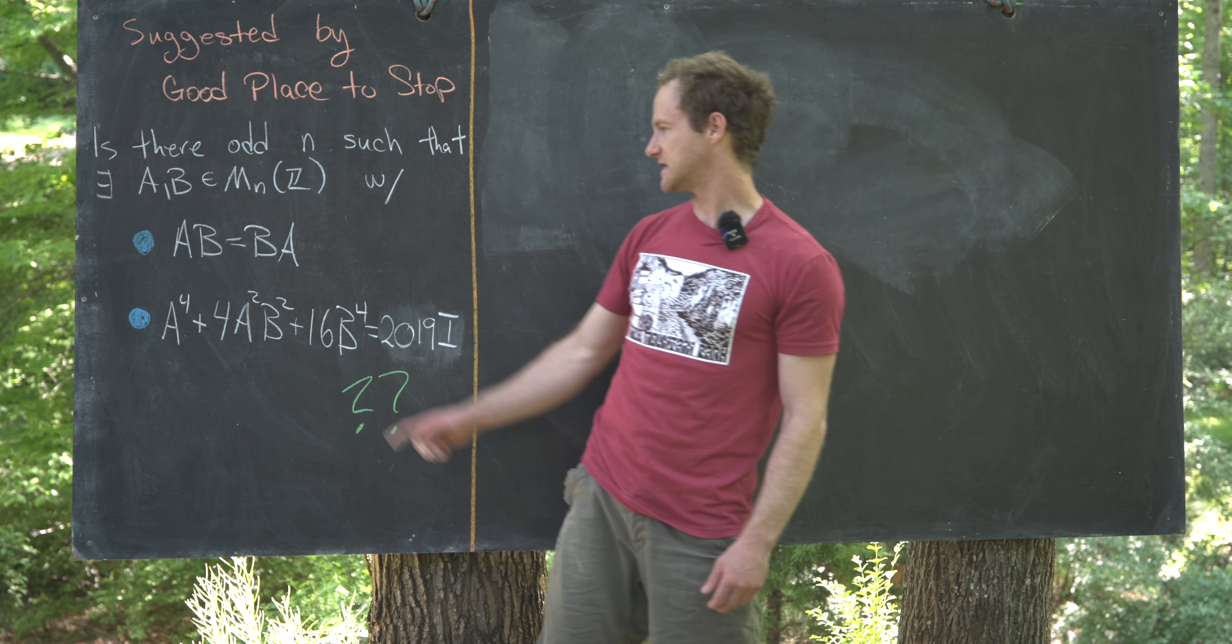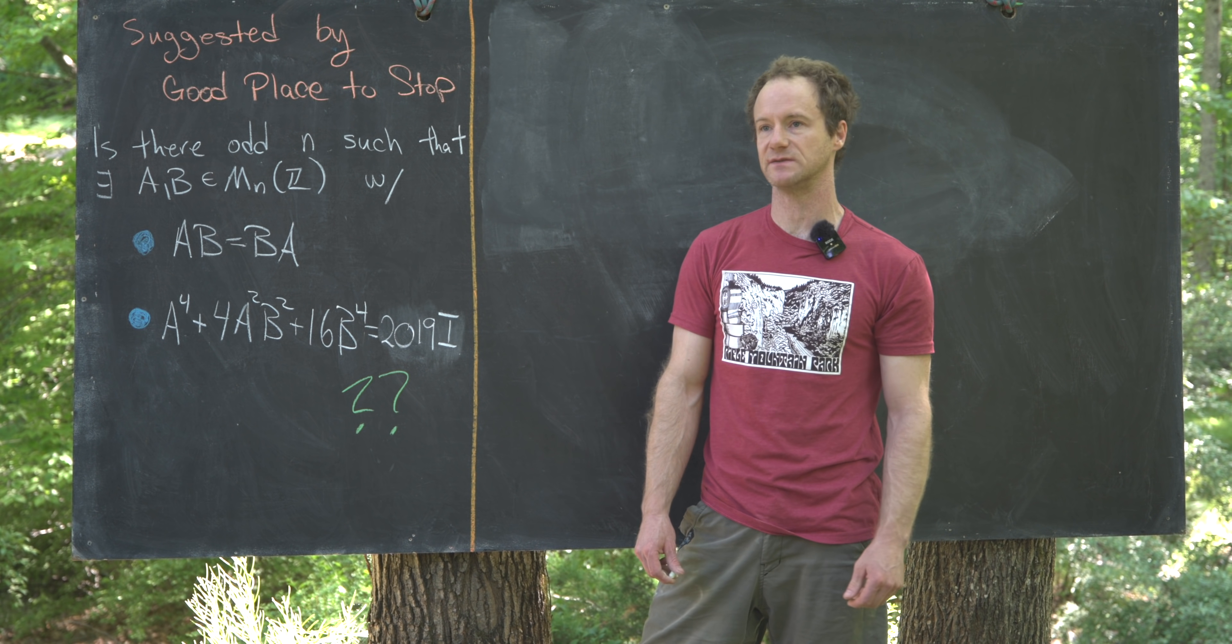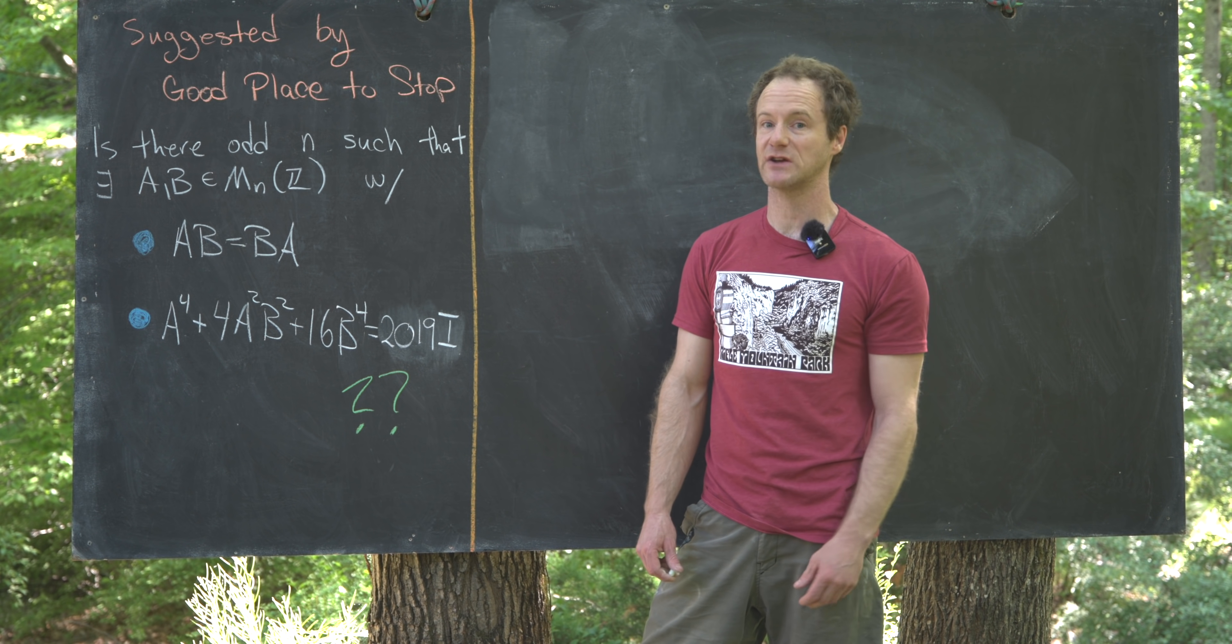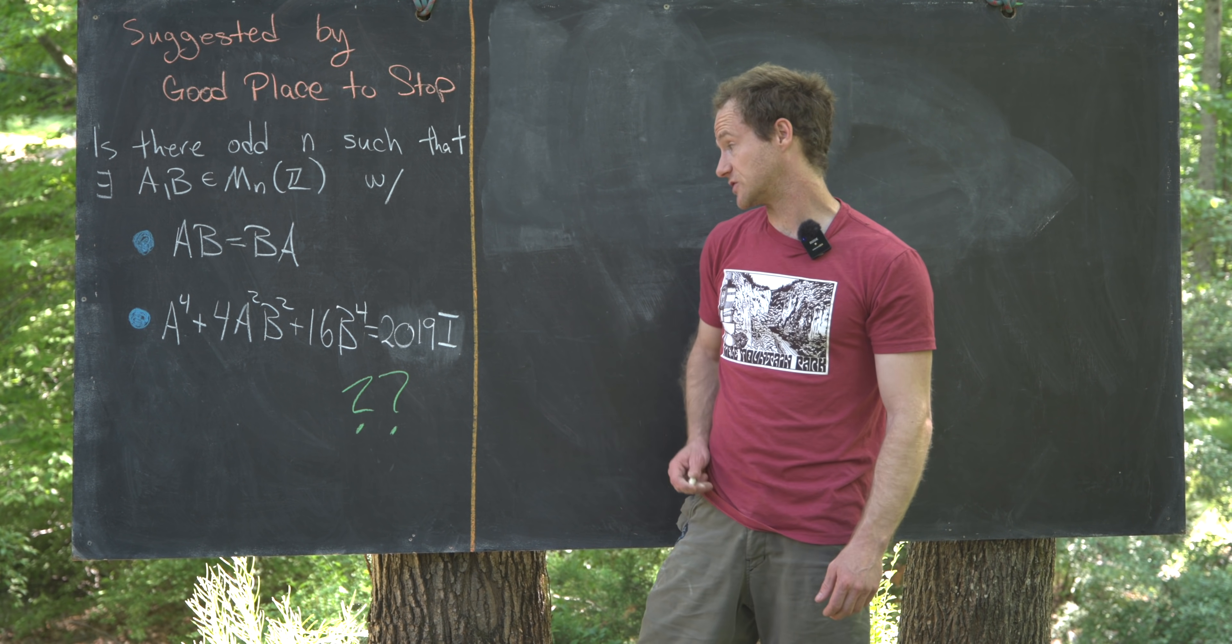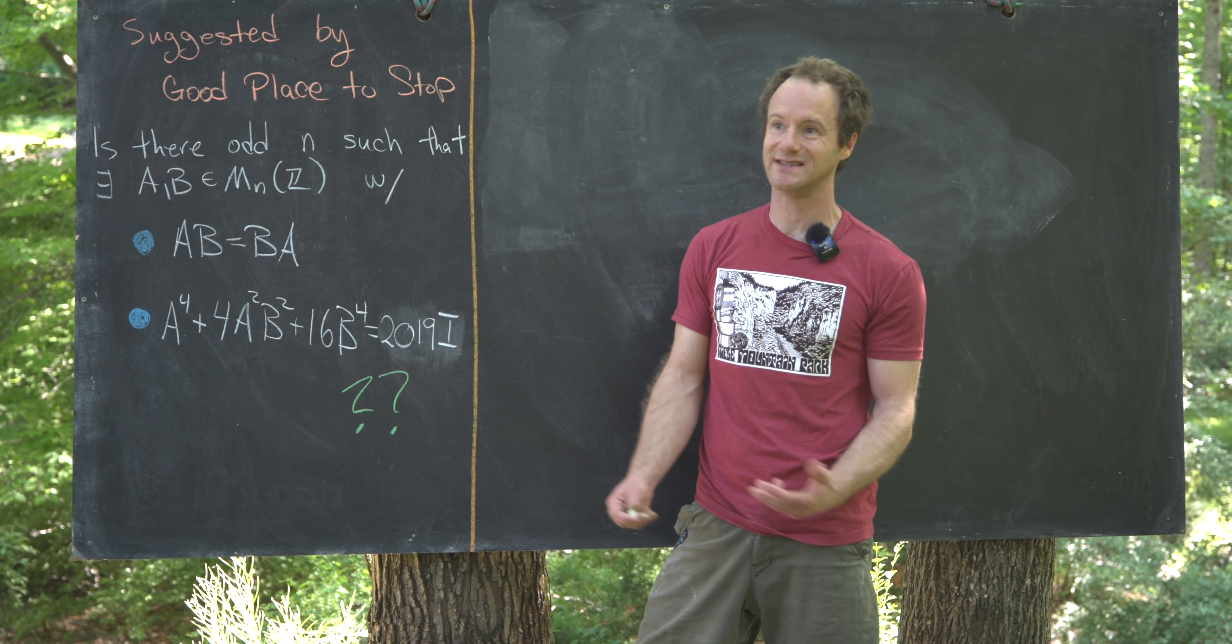The next hint built into this is that AB equals BA. In other words, we have commutativity among these matrices. That's a pretty special fact about these matrices, and it will allow us to factor the left-hand side of this polynomial equation nicely.